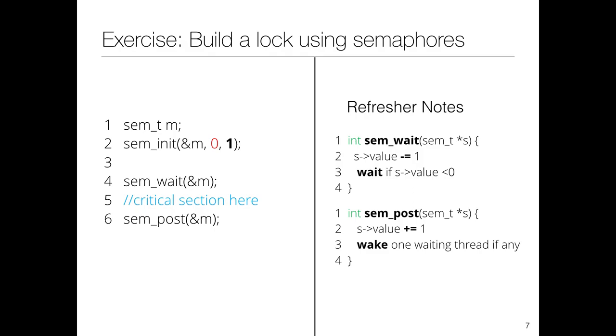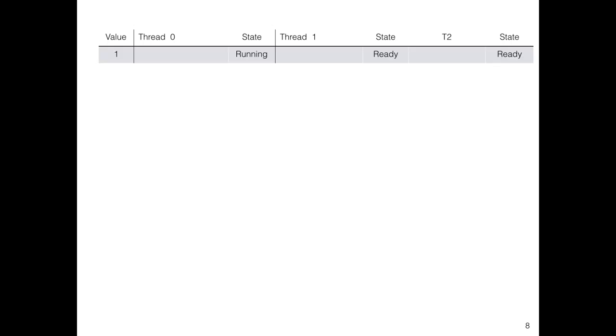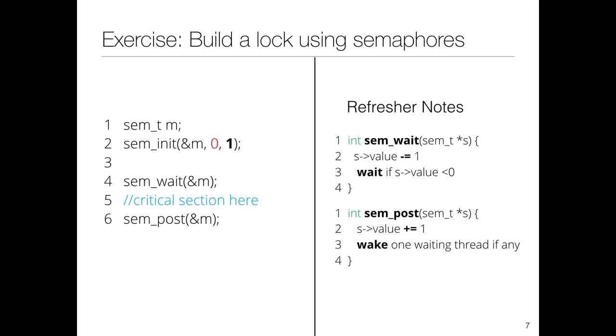The second argument to sem_init set to zero means all threads in the process share this semaphore, though it can also be used across multiple processes. We discussed one particular execution with the initial semaphore value of one. Now instead of two threads, I have three threads—this is just to show that the magnitude of the negative semaphore value equals the number of waiting threads.